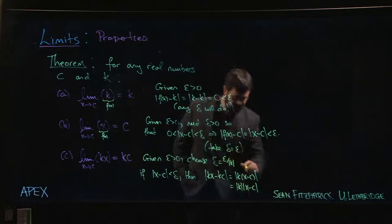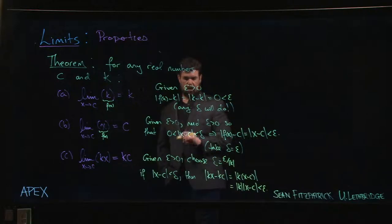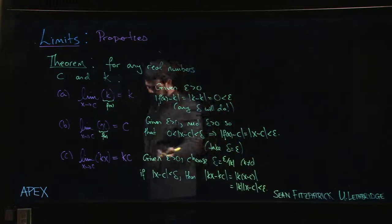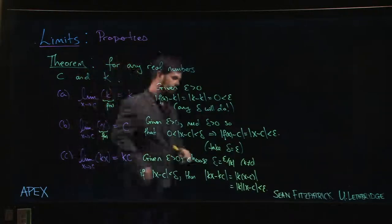One catch, of course: this is going to fail if k is zero. But if k is zero, then k times x is zero. Zero is a constant, and you're back in part a.